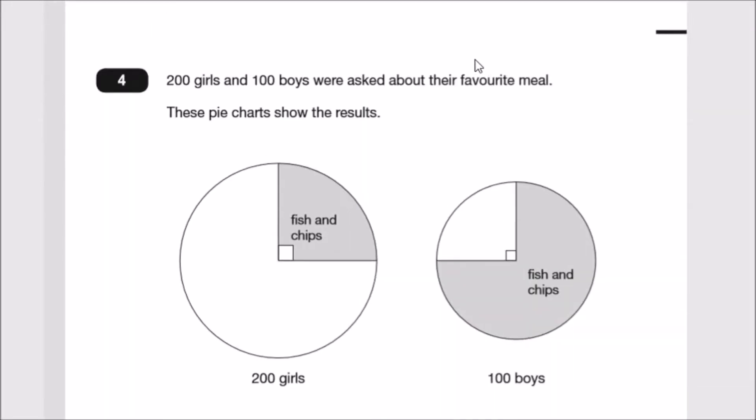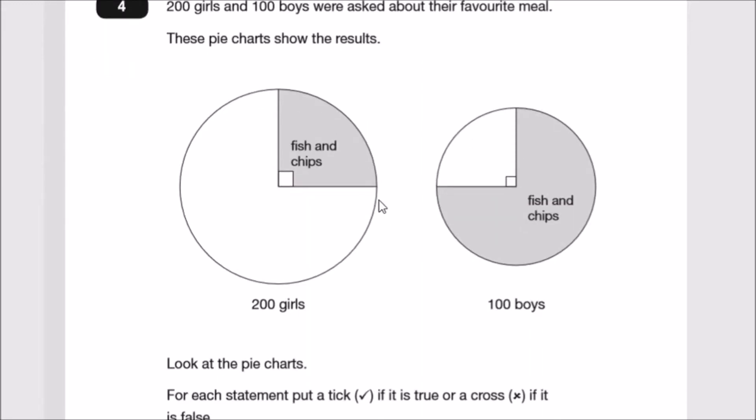Number four: Describing pie charts. 200 girls and 100 boys were asked about their favorite meal. Out of 200 girls, a quarter like fish and chips, so a quarter of 200 is 50. According to the 100 boys, three quarters like fish and chips, so this should be three quarters of 100, which is 75.